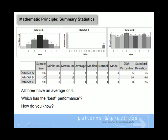In the table, we see three sets of summary data statistics for data sets A, B, and C. Each data set has a sample size of 100 and an average value of 4.